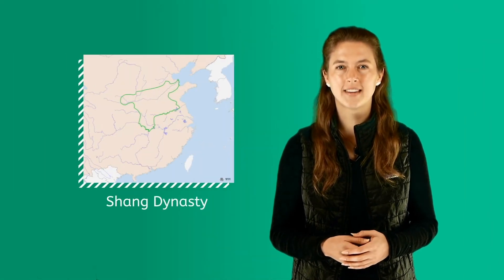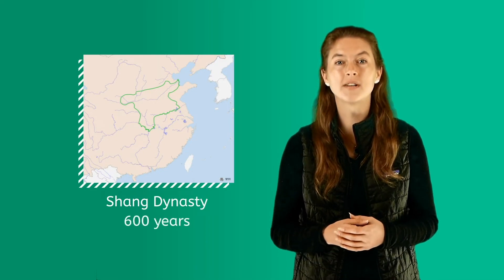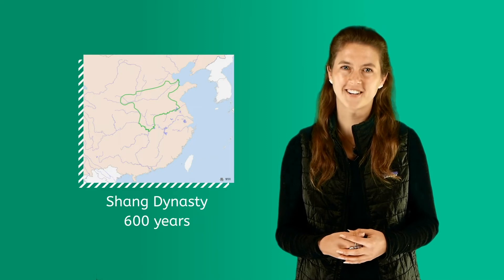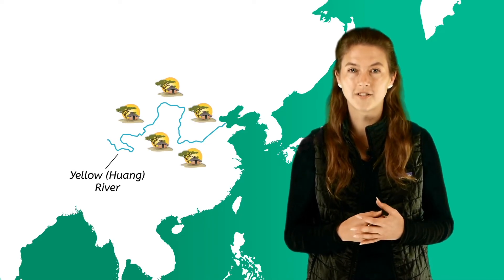The second Chinese dynasty was the Shang dynasty. The Shang dynasty lasted over 600 years and was led by 30 different emperors. During this time, the Chinese people lived mainly in small villages that were organized along the Yellow or Huang River.